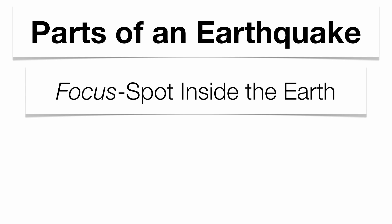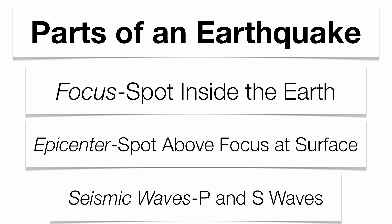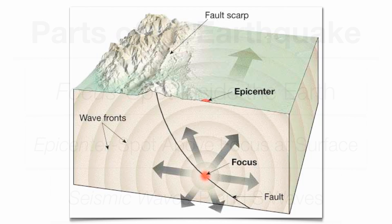You have a couple of different parts of the earthquake. The focus is actually a spot inside the Earth where the earthquake actually occurs along the fault line. It's where the energy — the P waves and the S waves — are actually emitted. Directly above that, at the surface, is the epicenter. There's a picture of the focus: you notice that occurs right along the fault line, and directly above the focus is your epicenter.